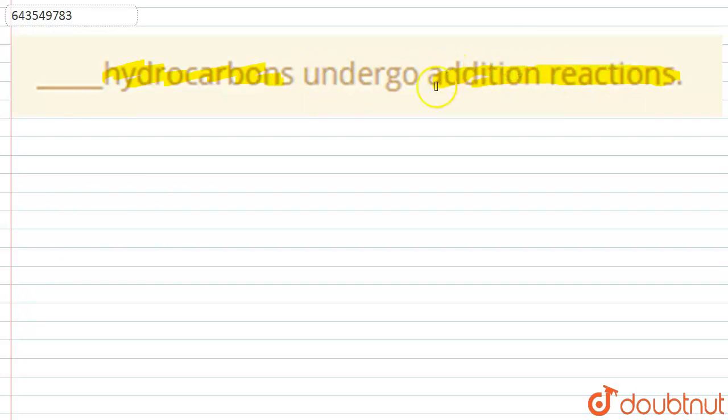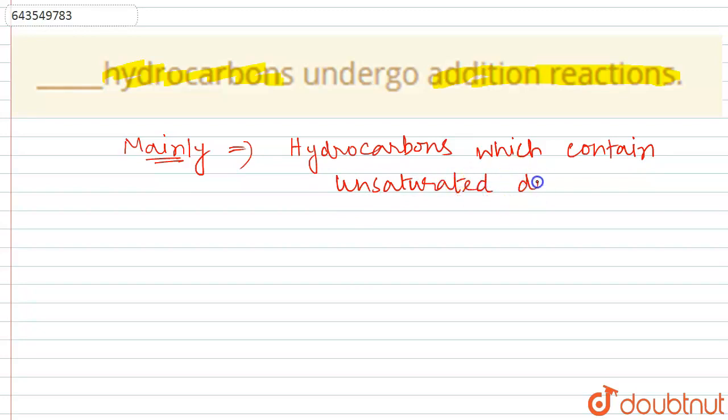Which hydrocarbons undergo addition reactions? So mainly the hydrocarbons which contain unsaturated double bonds, mainly alkenes and alkynes.